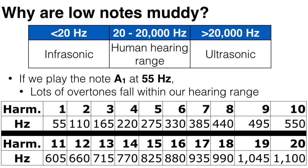The first 20 harmonics only get us up to 1,100 hertz, well within our hearing range. So when we play this low note, we are in fact hearing lots and lots of notes all at once, although generally the first eight harmonics are the strongest and the rest get progressively weaker.